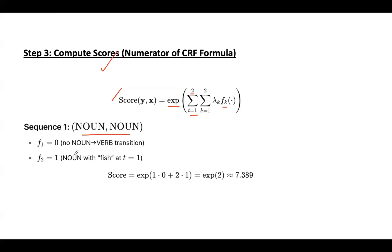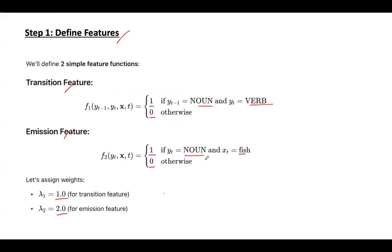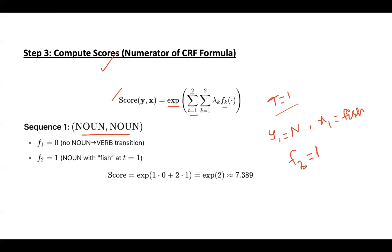At time t equal to 1, y1 value is taken as noun, x1 value is taken as fish. So this is time t equal to 1, and f2 equal to 1 because there is a noun plus fish sequence. If there is noun plus fish sequence, then f2 value will be 1. So here we got f2 value as 1.